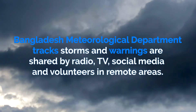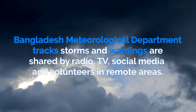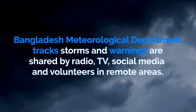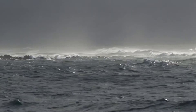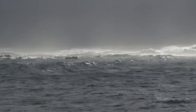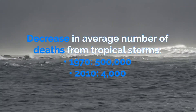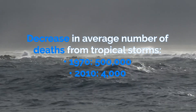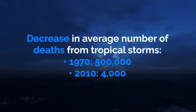Cyclones are tracked by the Bangladesh Meteorological Department. Warnings are issued over radio, TV and on social media. Remote rural areas are also warned by volunteers using bikes. All of this effort has caused the average number of deaths by tropical storms to decrease from 500,000 in 1970 to just 4,000 in 2010.